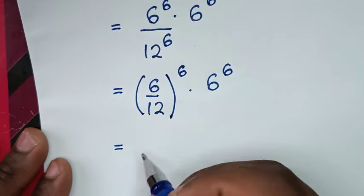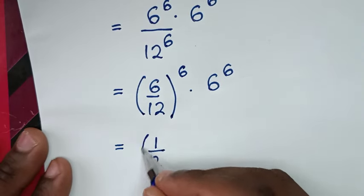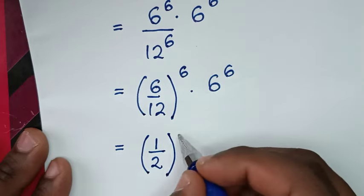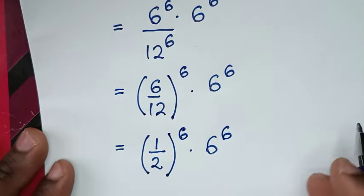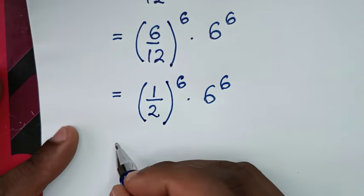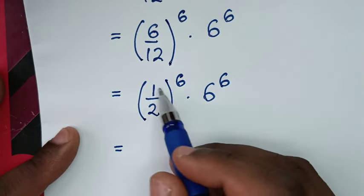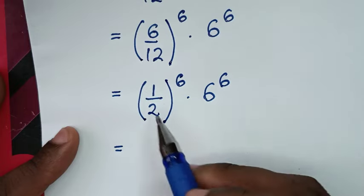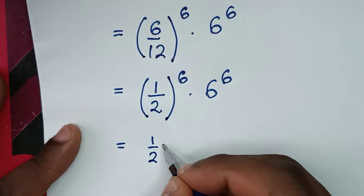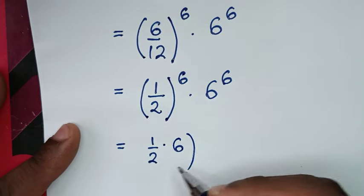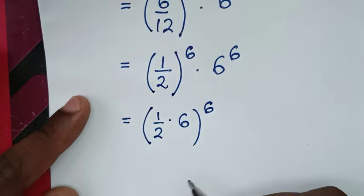Then it will be equal to: simplifying 6 over 12 — 6 divided by 6 is 1, and 12 divided by 6 is 2 — so we get (1 over 2) to the power of 6, times 6 power of 6. Now, for multiplication of exponents with different bases but the same power of 6, we multiply the bases: so (1 over 2) times 6, all to the power of 6.